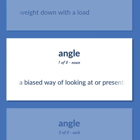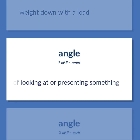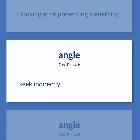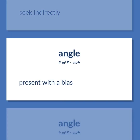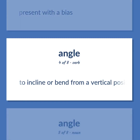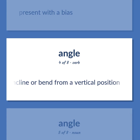Bias/Slant: A biased way of looking at or presenting something. To seek indirectly. To present with a bias. To incline or bend from a vertical position.